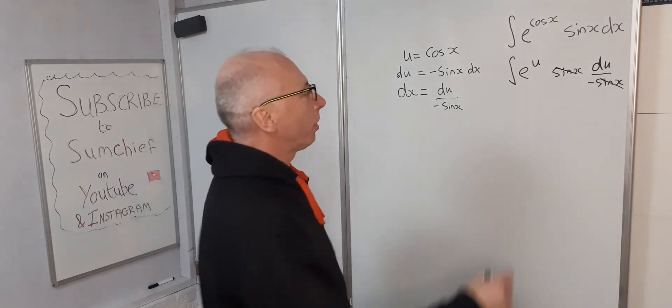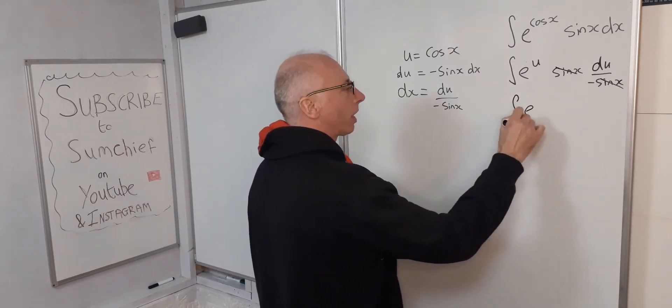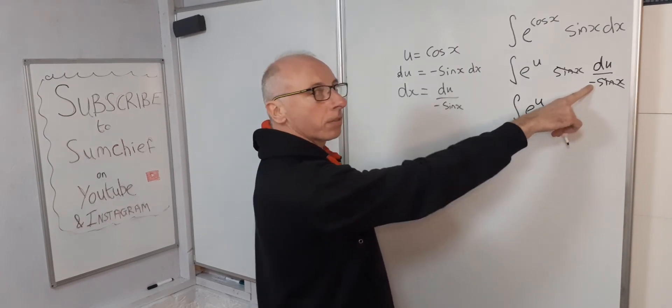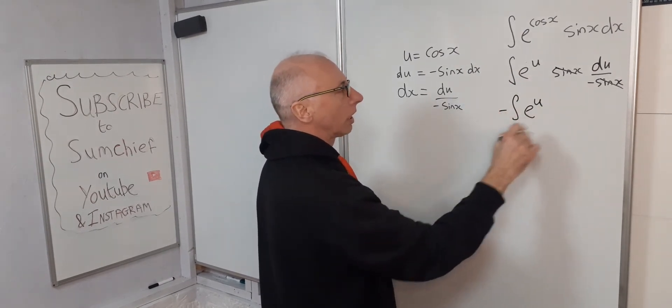So let's just simplify this up a little bit more. So now we've got e to the u. This negative still counts, so bring this out front. And then du.